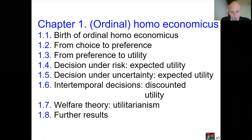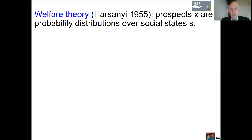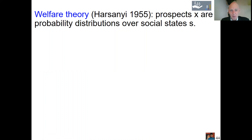Continuing the ordinal approach, we now look at welfare theory — how to divide money fairly over different people and make everybody as happy as possible. This is utilitarianism. We look at situations where the prospects to choose from are social states, such as the situation for a country like the Netherlands, and we also allow risk and uncertainty in the form of probability distributions over social states.